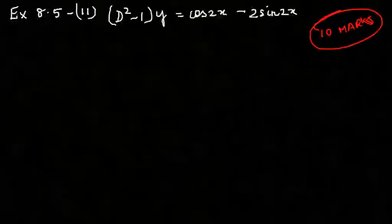The left-hand side has t squared minus 1. So the first thing we're going to do is write the characteristic equation.